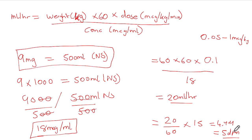The same calculation applies for dobutamine and dopamine. The difference is the concentration: typically 250 mg in 200 mils of solution for dobutamine and dopamine, versus 9 mg in 500 mils for epinephrine. Doses for dobutamine and dopamine start at 5 micrograms per kg per minute and can be increased up to 20 micrograms per kg per minute. I hope you enjoyed this video — drop a like and a comment. My name is Dr. Moses Kazewu — until next time, bye-bye.